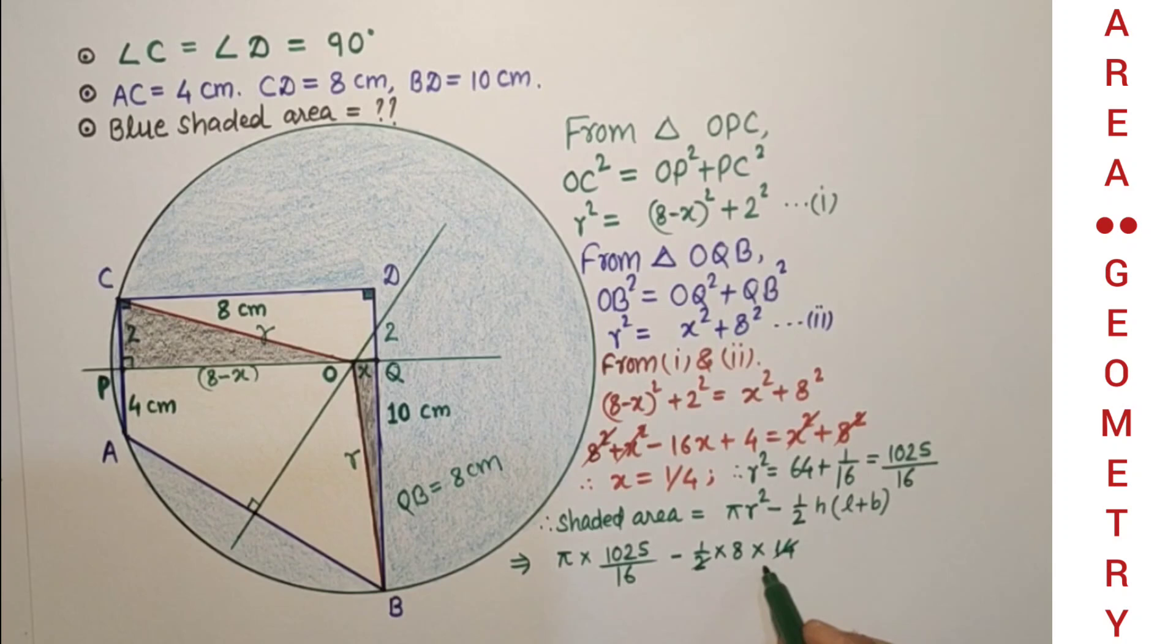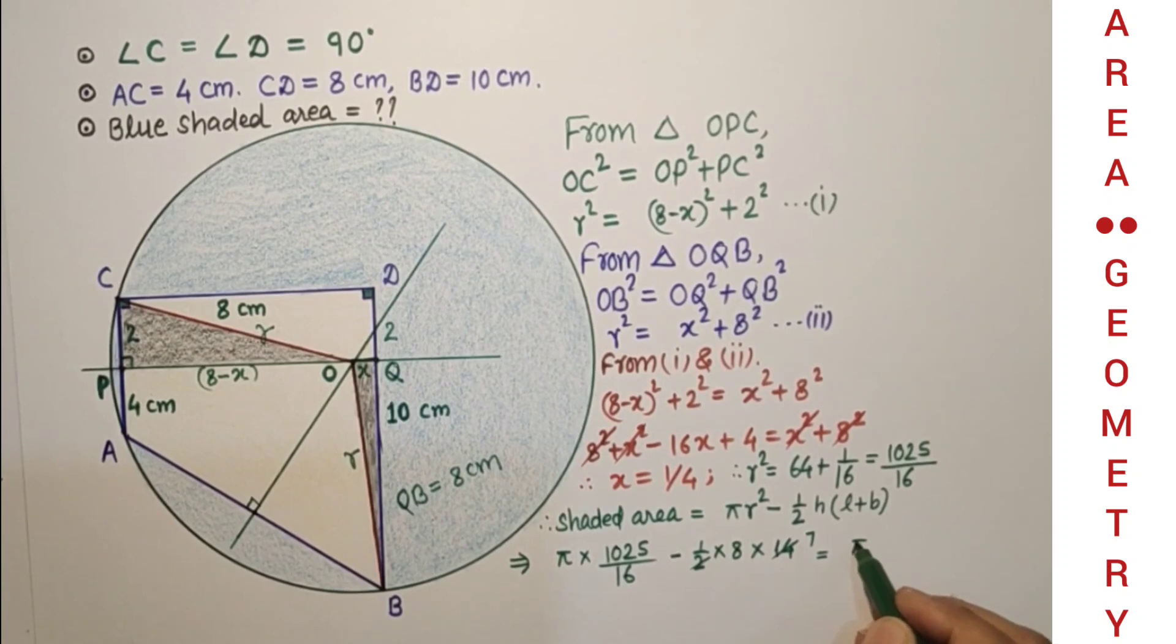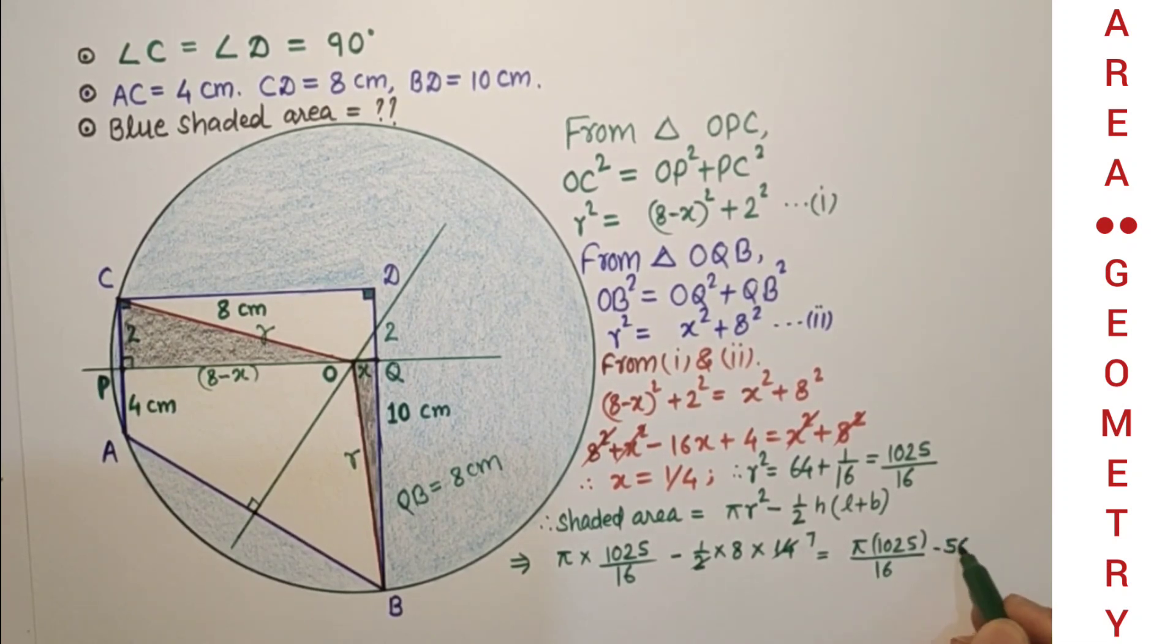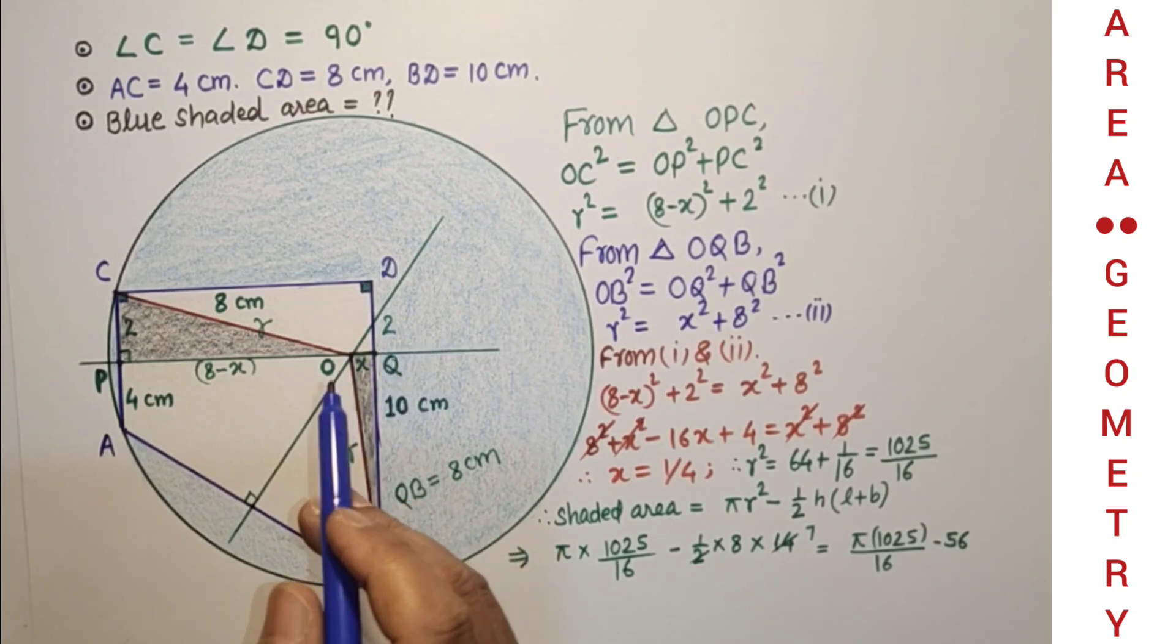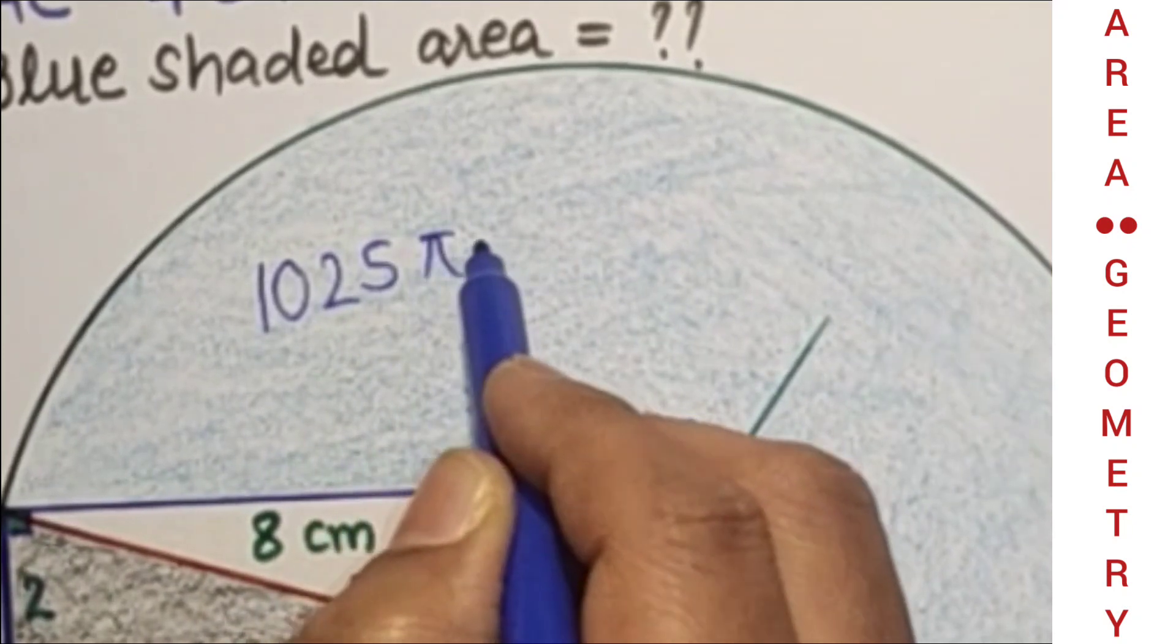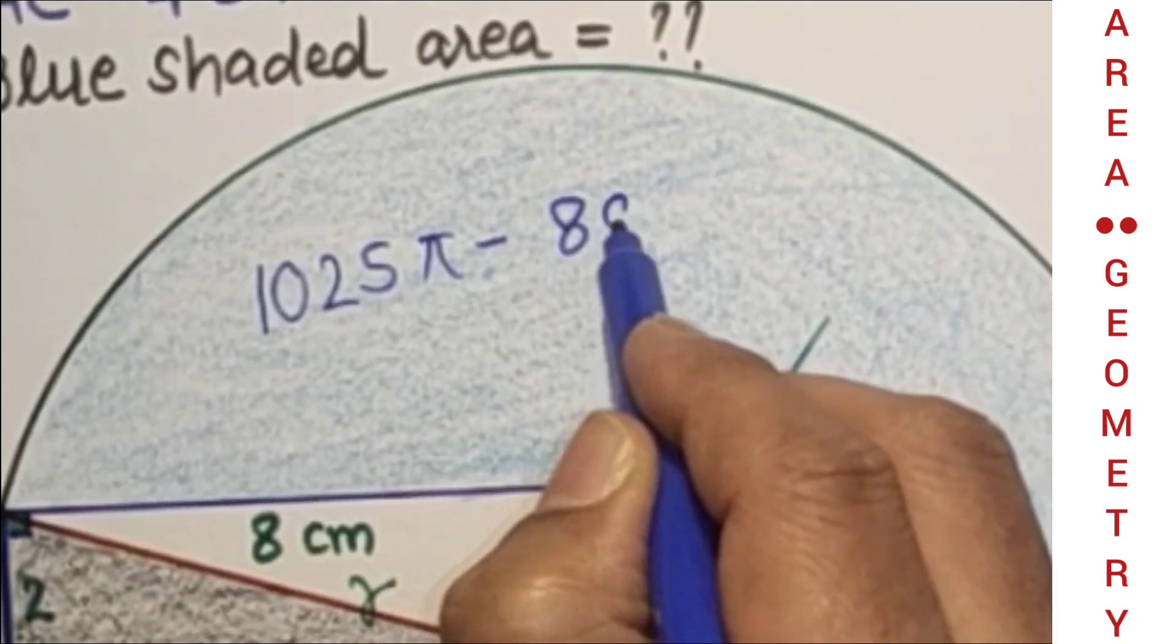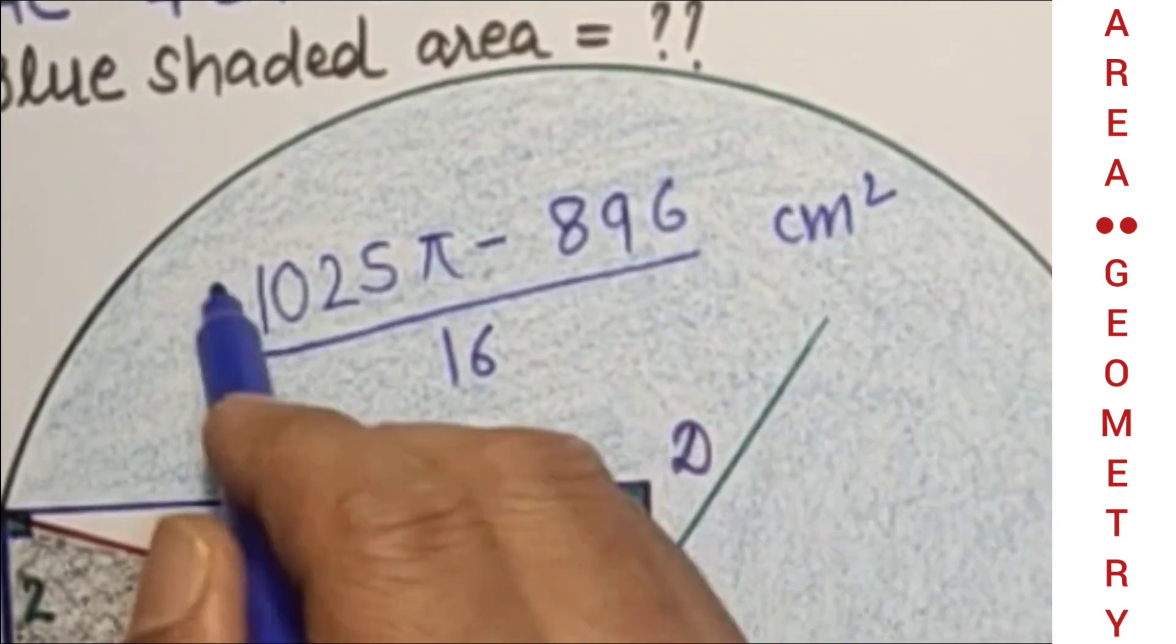These two will get cut and we are getting π times 1025/16 minus 56 cm². So the final area of the blue shaded portion will be (1025π - 896)/16 cm², and this is the answer.